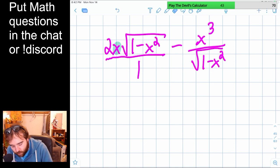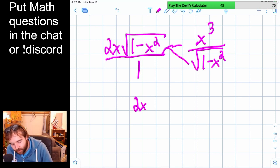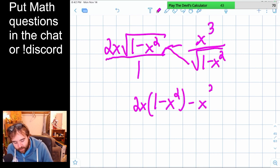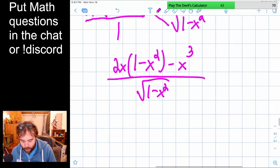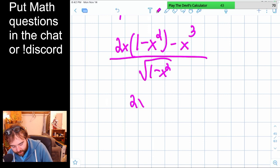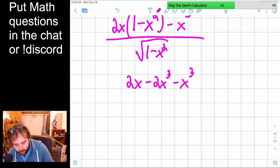So what are we going to do? We're going to multiply common denominator. So we got to multiply the top and bottom by that. So we end up with 2x, and then the square roots just cancel out. And then minus x cubed over that denominator. And we have 2x times 1 minus x squared distribute, so 2x minus 2x cubed, minus x cubed. So that's our new numerator.